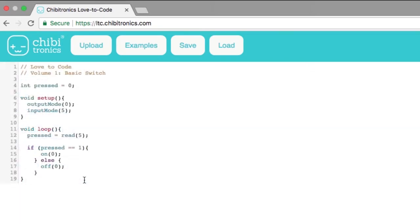Here you see the basic code for interacting with a switch. Inside the loop, it reads the value of pin 5 into a variable called pressed. This if statement checks to see if the value of the variable pressed is equal to 1. This check is called the condition of the if statement. If the switch is pressed, the condition is true, and the top block of the code runs, which turns pin 0 on.